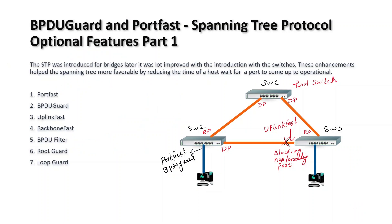Hello everyone, welcome to the CCNN video series. We will talk about BPDU Guard and PortFast — these are optional features of the Spanning Tree Protocol. First, we will introduce the optional features, starting with bridges and switches.